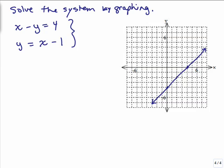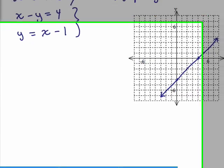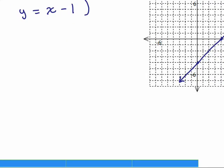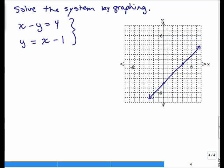All right, the next one, y equals x minus 1. Oh, there's the phone. Okay. So the second line, I'm going to use slope-intercept method, y equals x minus 1.